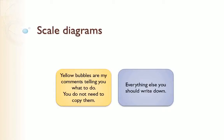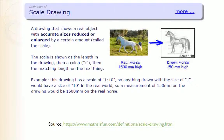This is how to draw scale diagrams. Anything in yellow is my comment telling you what to do, so you don't need to copy that, but everything else you should write down. A scale diagram has accurate sizes that have been reduced or enlarged by a certain amount. You'll always see a colon — the length in the drawing is the first part, and the matching length in the real thing is the second part. So in this one, a length of one centimeter drawn will represent 10 centimeters in the real world.